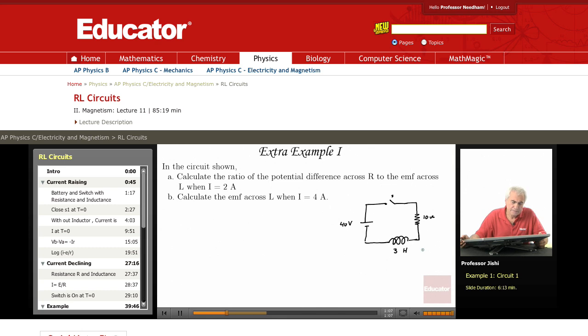Now we're told that when I is 2 amperes, we want to calculate the ratio of the potential difference across R to the EMF across L when I is 2 amperes. So we close the switch, there's a current.